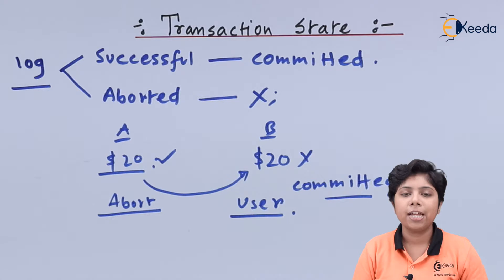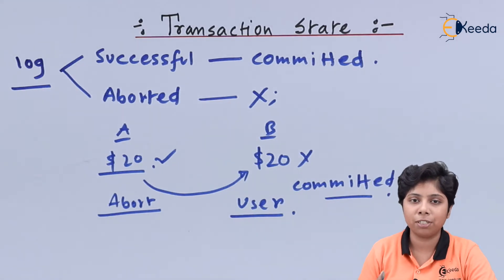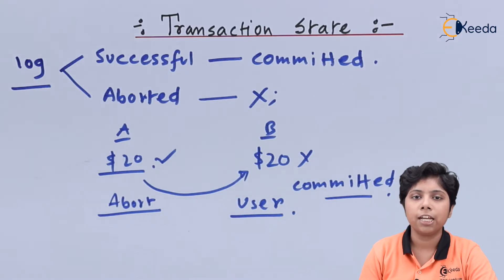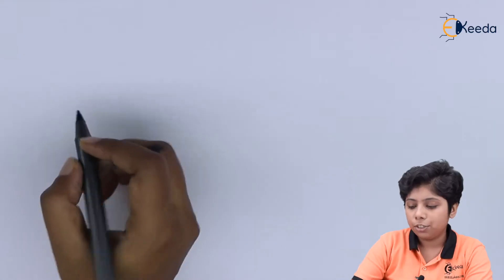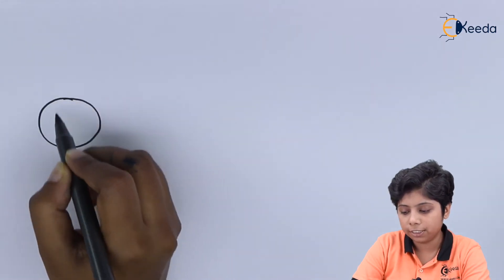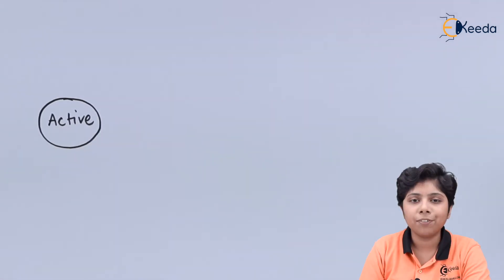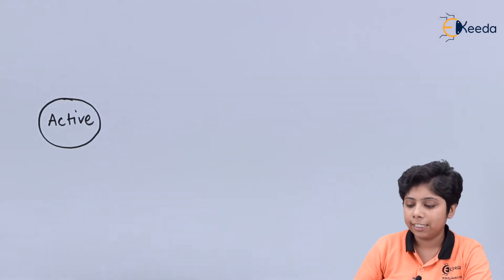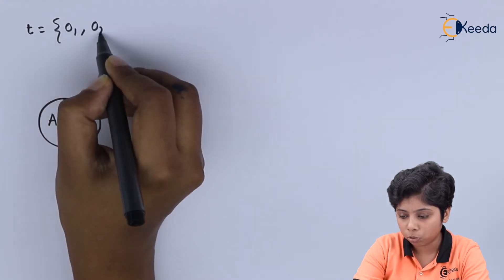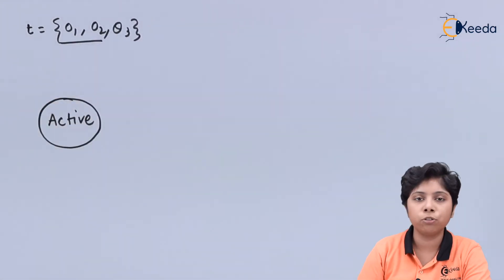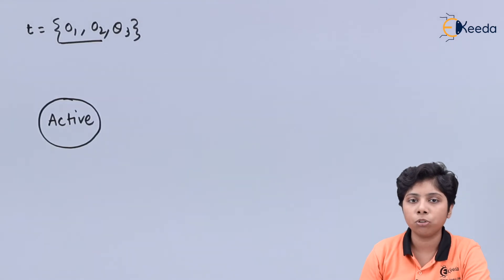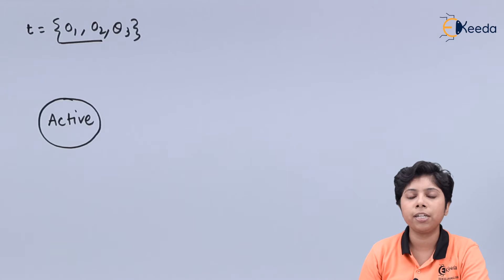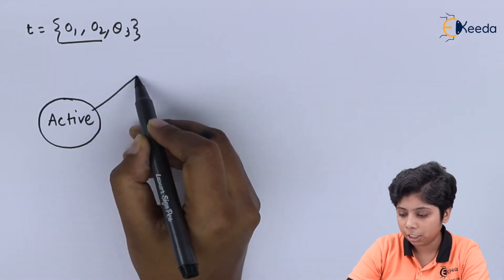Now considering the transaction states: first, when a transaction is started, it is in the active state. After that, when the transaction is performing its operations and has completed some of them — say operations O1, O2, and O3, and has performed O1 and O2 so far — then we say it is in the partially committed state. We cannot say whether it will continue with O3 or complete after O2, so it is in the partially committed state.